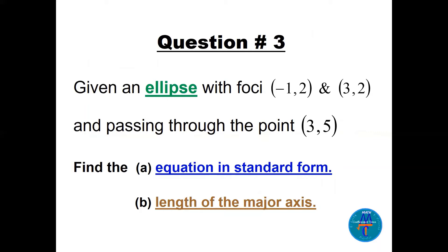Question 3: find the equation given an ellipse with foci F(−1, 2) and F′(3, 2), passing through the point P(3, 5). Find the equation and the length of the major axis. The important question is: which type of ellipse is this — vertical or horizontal major axis? Before solving, how do you know? I'll show you a quick sketch.